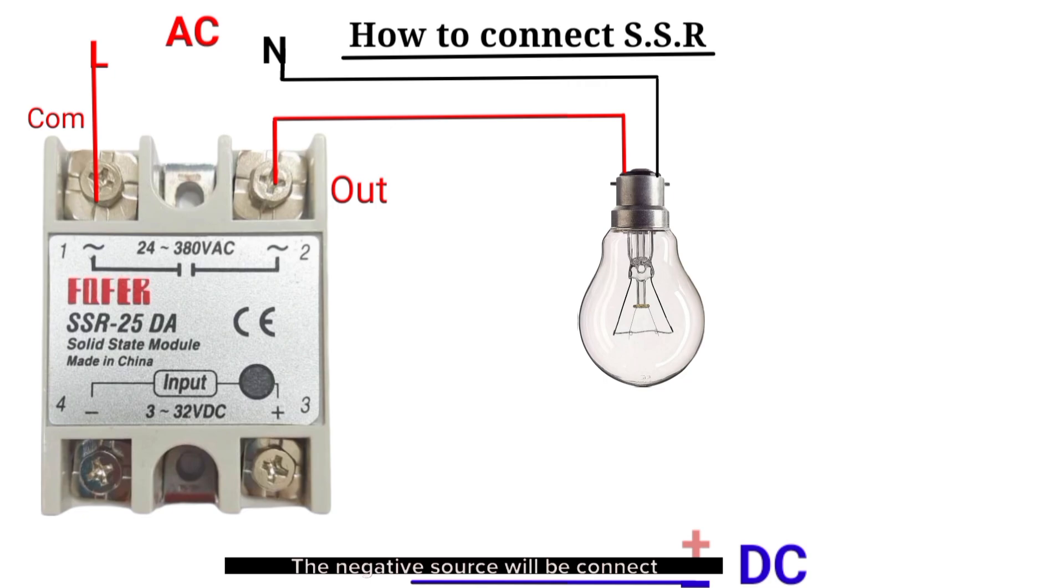Now to the SSR power. The negative source will be connected to the negative terminal of the SSR, and the positive source will be connected to the positive terminal of the SSR. Boom, the SSR indicator light comes up and the bulb turns on instantly.